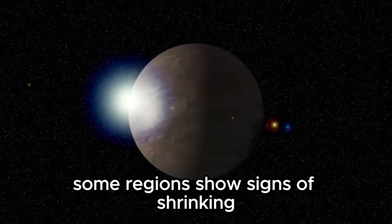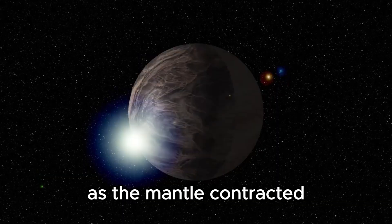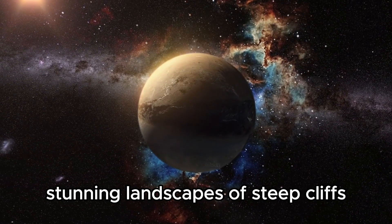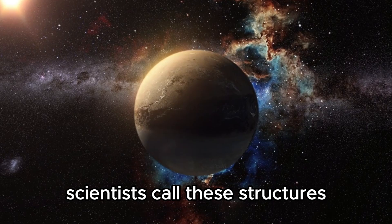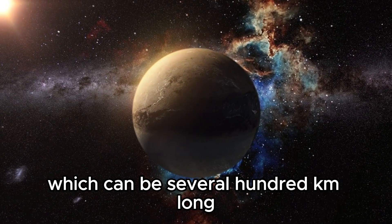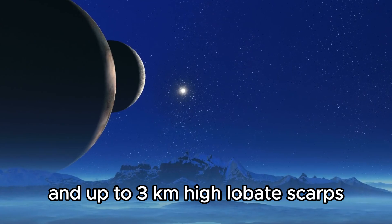Between the craters are vast plains that are probably formed by ancient volcanic activity. Some regions show signs of shrinking, indicating that the planet has cooled over time as the mantle contracted. Stunning landscapes of steep cliffs and towering precipices have formed. Scientists call these structures, which can be several hundred kilometers long and up to 3 kilometers high, lobate scarps.